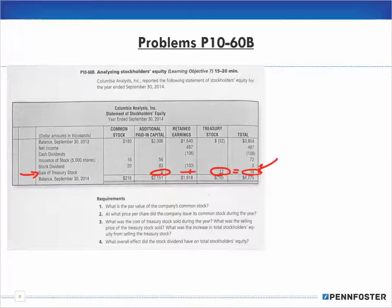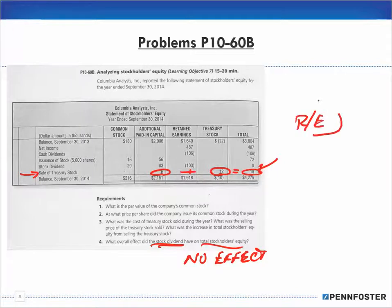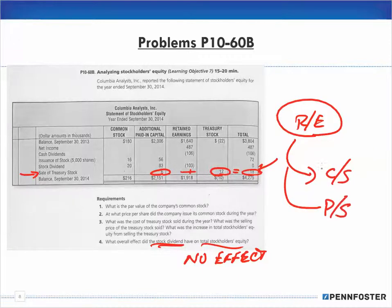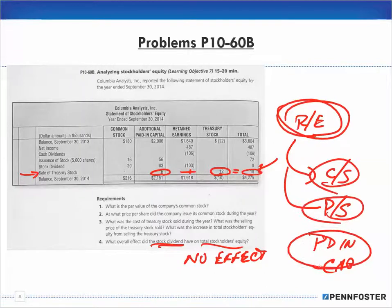Question four: what overall effect did the stock dividend have on stockholders equity? When you have a stock dividend, it has no effect on overall stockholders equity. All we are doing is taking it out of retained earnings and creating either common stock or preferred stock, along with the appropriate paid-in capital in excess of par. These are all equity accounts.